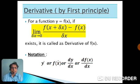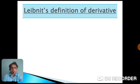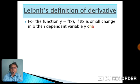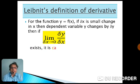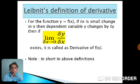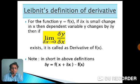We will now move to the second definition of derivative, given by Leibniz — known as the Leibniz definition. Again, we consider the same function y = f(x). We consider delta x as a small change in x, so y also changes, and we denote that change in y by delta y. The limit becomes: limit as delta x tends to 0 of delta y / delta x. If this limit exists, it is the derivative of f(x). Comparing the two definitions, delta y is simply f(x + delta x) − f(x) from the previous definition. So these two definitions are not truly different — only the symbols used differ.